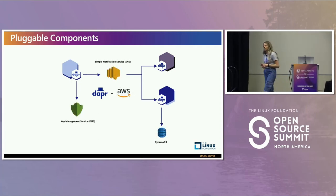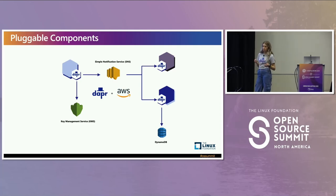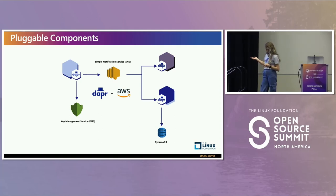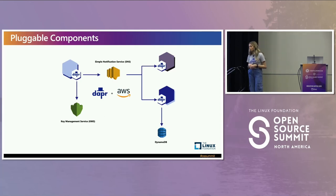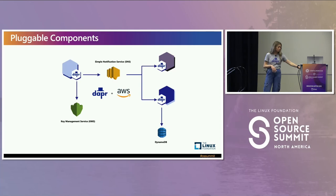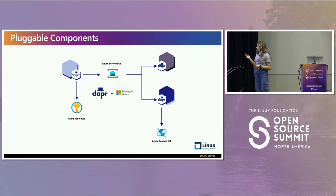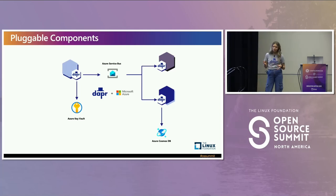Maybe your business requirements change or you're trying to enable AWS cloud infrastructure. You can use AWS cloud native services such as KMS, SNS, or DynamoDB with zero lines of code change from your application. The same would be for Microsoft Azure — you could swap out for Key Vault, Azure Service Bus, and Cosmos DB, again without having to change any of your application code, because you are using that DAPR abstraction.